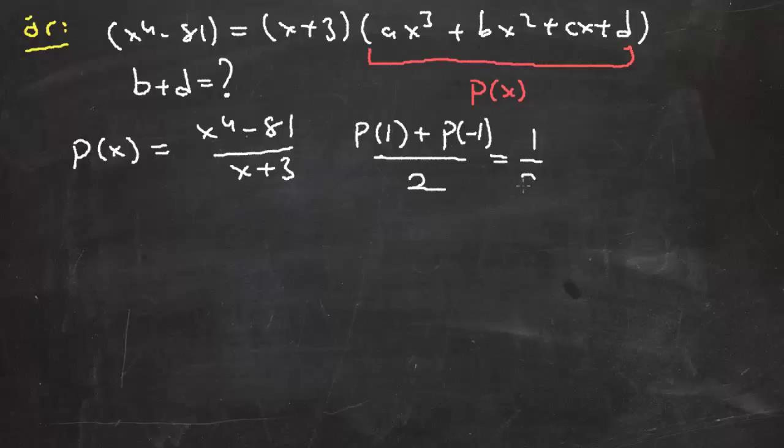O zaman burada 1/2 [x yerine 1 yazarsak (1 - 81)/(1 + 3) = -80/4 = -20 + ((-1)⁴ - 81)/(-1 + 3) = (1 - 81)/2 = -80/2 = -40]